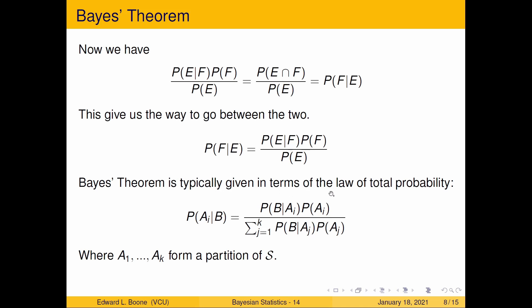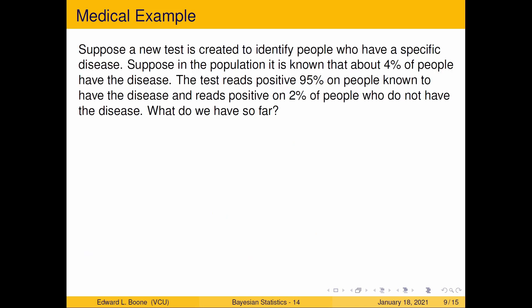Bayes' theorem is typically given in terms of the law of total probability. So usually when you see things, you're talking about the probability of AI given B, which is the probability of B given AI times the probability of AI, all over the sum of the probability of B given AJ times the probability of AJ, where these form a partition of S. And this is the formula that we're really going to focus in on because this is the one that is most useful in our case, and this is what we call Bayes' theorem.